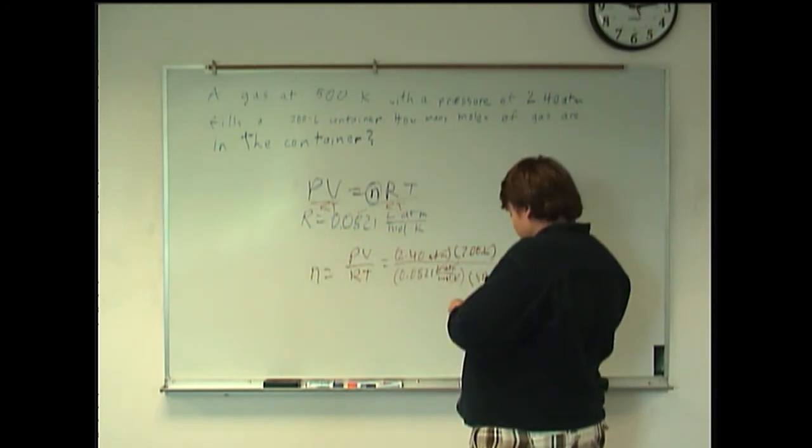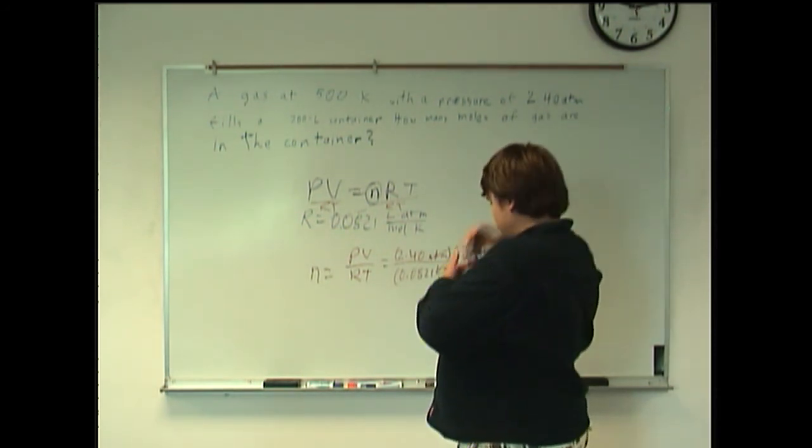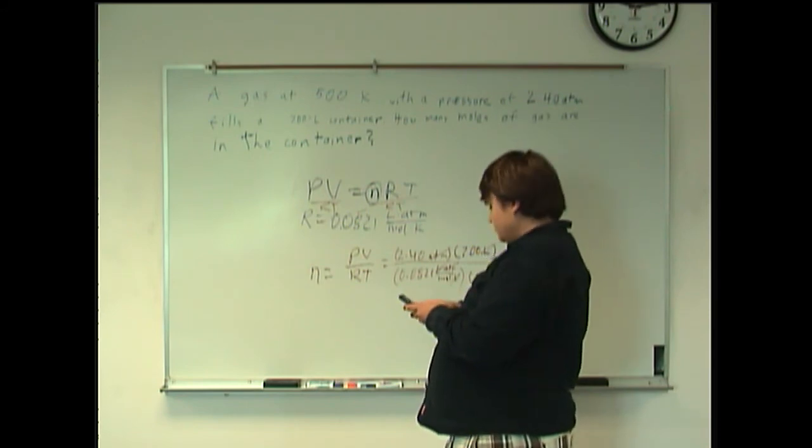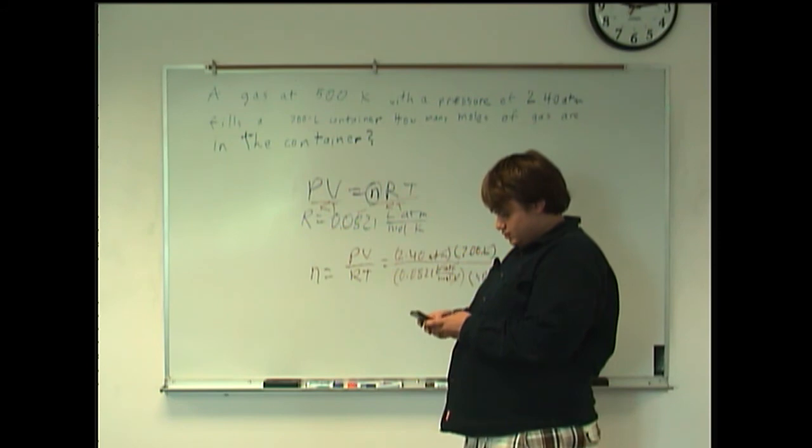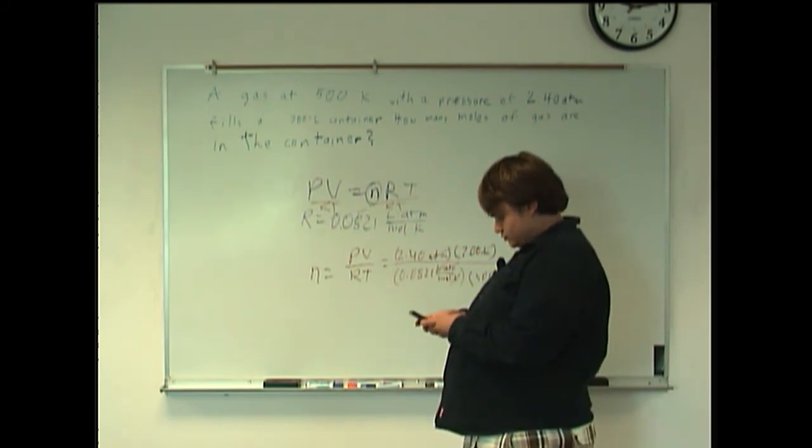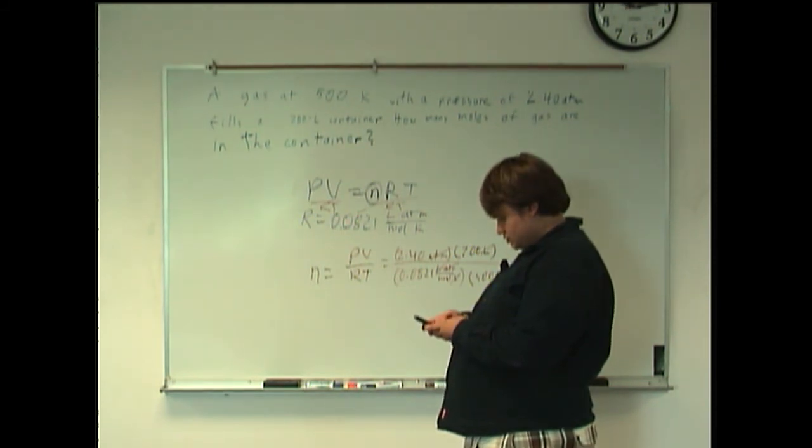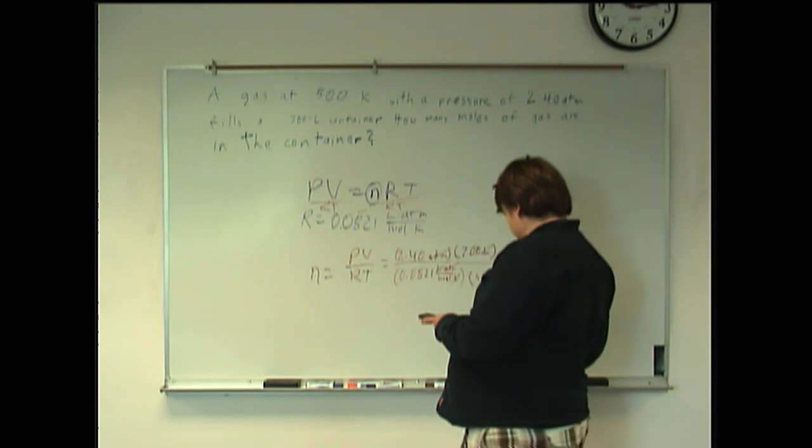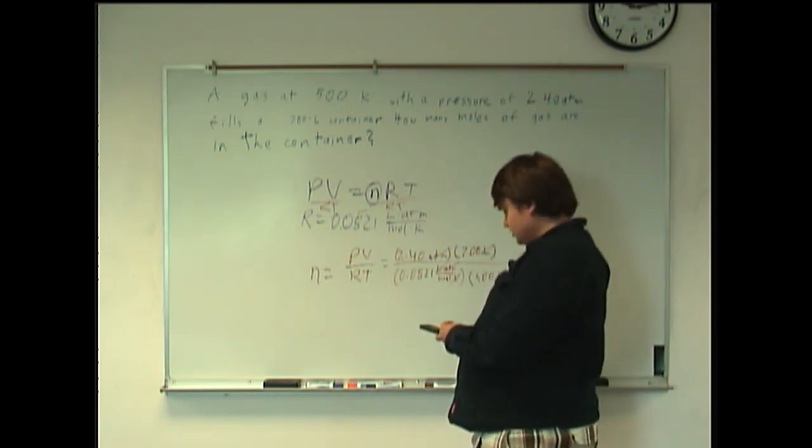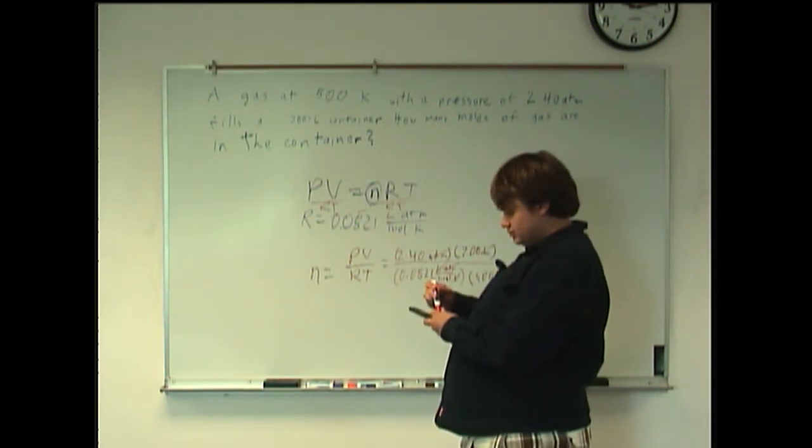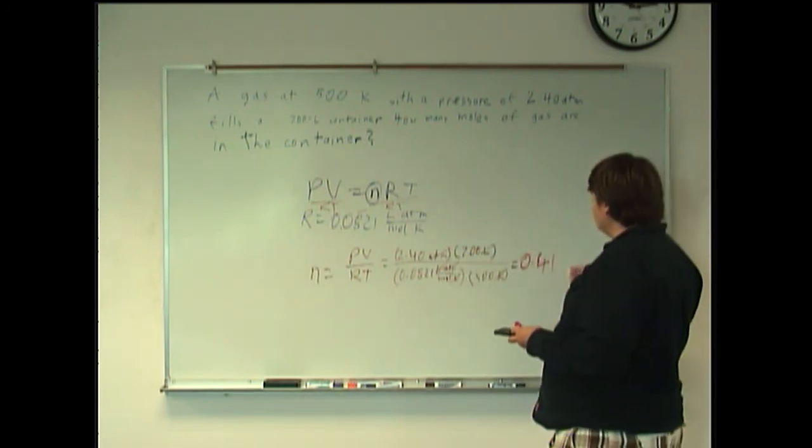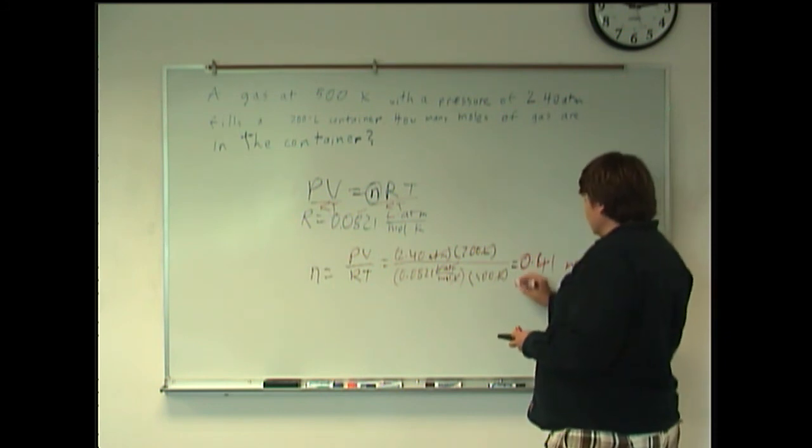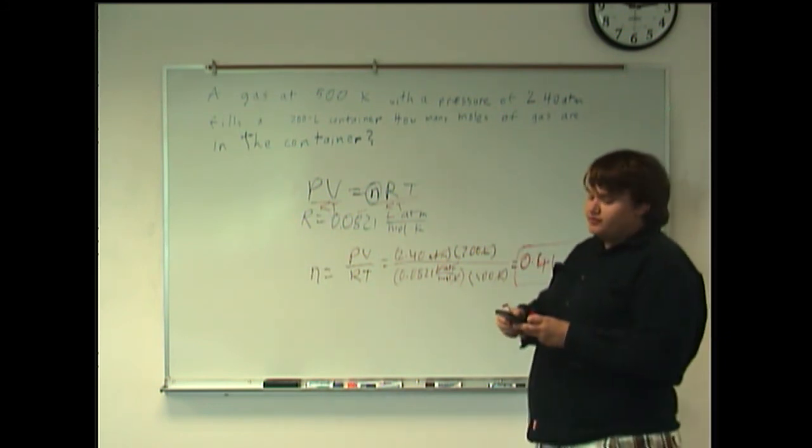And so, doing the calculation, we get, let's see, 2.4 times 7.00 divided by 0.0821 times 500. So, our number of moles, overall, is going to be 0.41 moles. And you can check that by punching it in on your calculator.